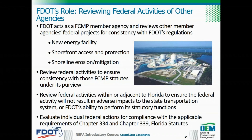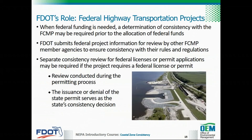This training focuses more on FDOT projects requiring federal consistency and how FDOT submits its projects for review by other FCMP agencies. Federal consistency determination generally takes place early on for projects screened as part of the Efficient Transportation Decision Making, or ETDM, process during planning. ETDM will be discussed in greater detail in Lesson 3. After the early review has taken place, another consistency review may take place again as part of the permitting process.